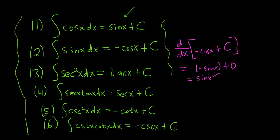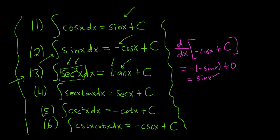The best way to memorize them is to think backwards. Like when you have secant squared, you ask yourself: what is a function whose derivative is secant squared? The derivative of tangent is secant squared, so the integral of secant squared is tangent x plus C. The harder ones are the ones with negative signs. Like when you're integrating sine, you say: what's a function whose derivative is sine? The derivative of cosine is negative sine, so you need an extra negative to cancel that. You'll notice that whenever you have secant tangent and cosecant cotangent, you just get the secant or cosecant functions.